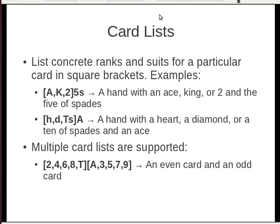Another piece of syntax is card lists. You can list concrete ranks and suits for a particular card in square brackets. So if you say, in brackets, ace or king or two, and then five or spades, it's a hand with an ace, a king or a two, and the five of spades. It's very basic.